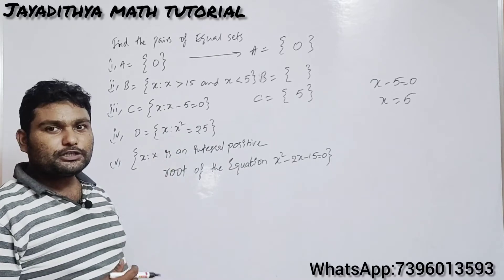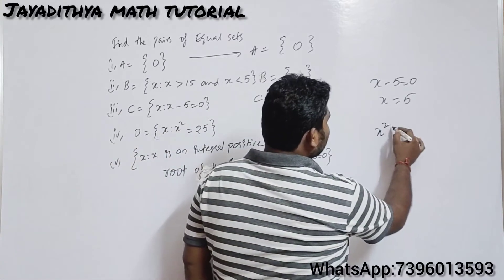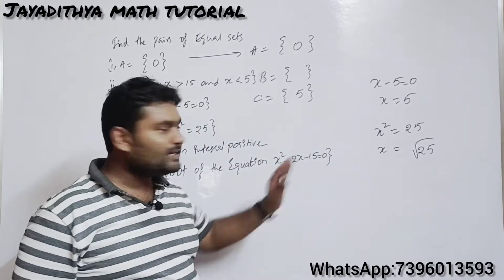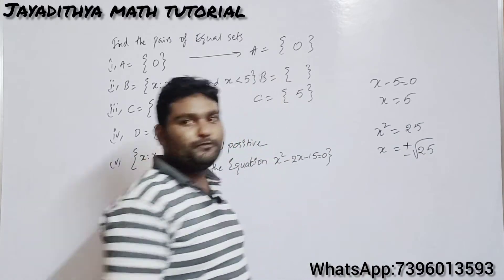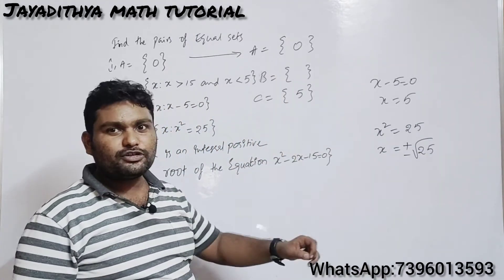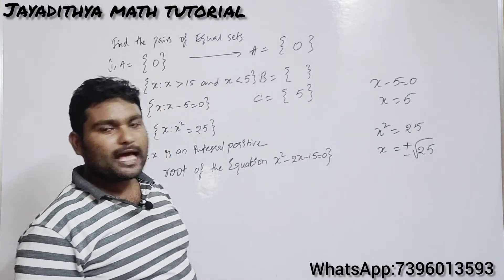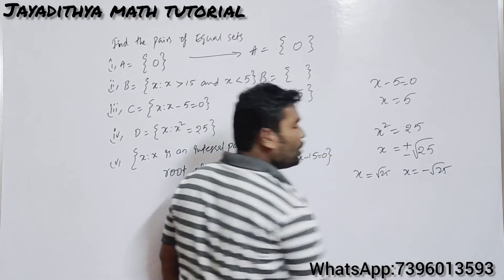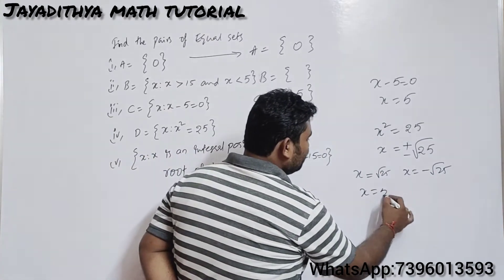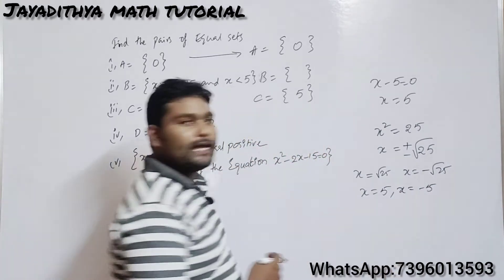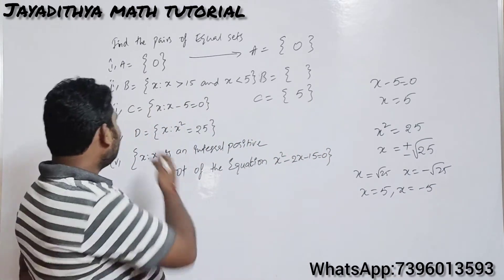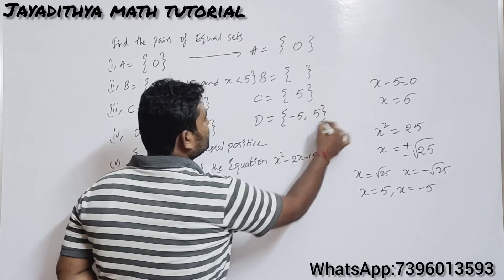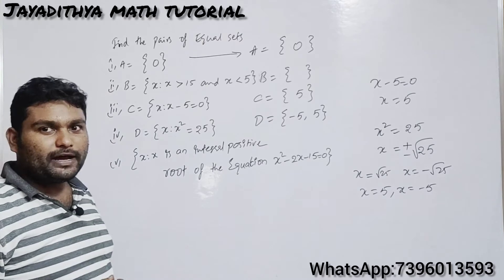Set D = {x : x² = 25}. Solving, x = ±√25, giving x = 5 and x = −5. Remember to include both plus and minus when a square goes to the right-hand side. So set D in roster form is {−5, 5}.